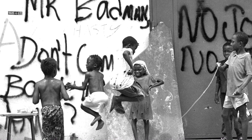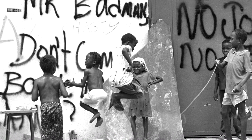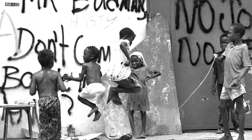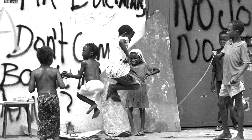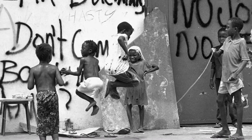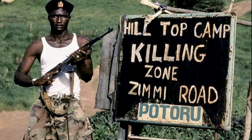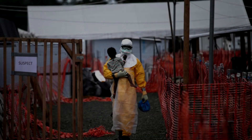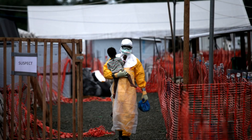Since then, the country has sort of drifted away from being America's little brother, starting to look more and more like a typical African country. In the 1990s and early 2000s, two civil wars took place, and in 2014 the country made international news because of the Ebola epidemic.